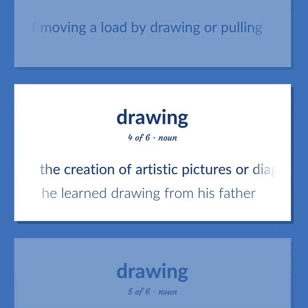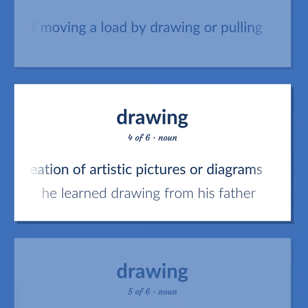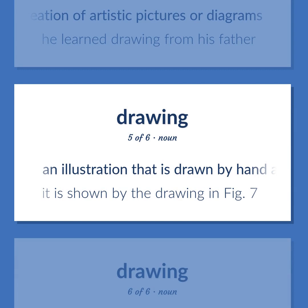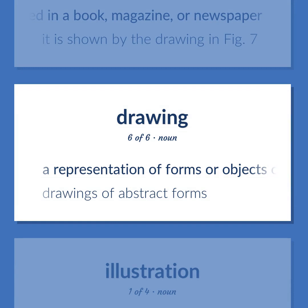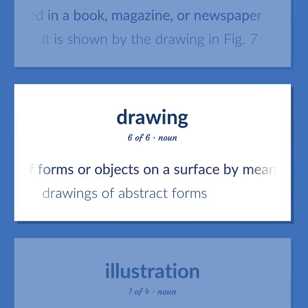The creation of artistic pictures or diagrams — he learned drawing from his father. An illustration that is drawn by hand and published in a book, magazine, or newspaper — it is shown by the drawing in Fig. 7. A representation of forms or objects on a surface by means of lines — drawings of abstract forms.